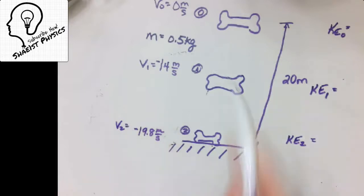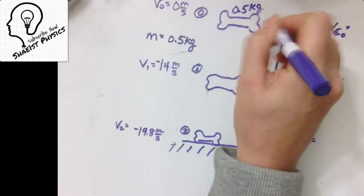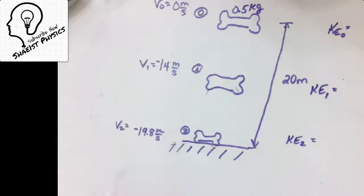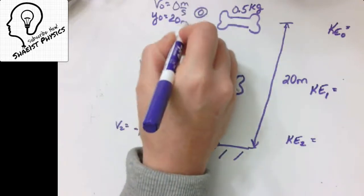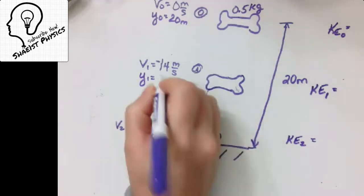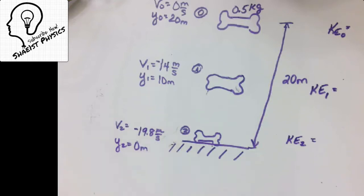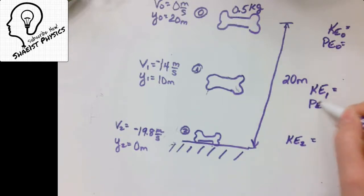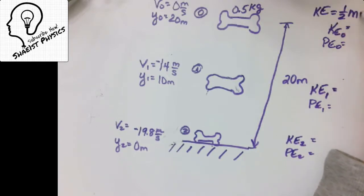What I'm doing is pulling out the key variables for each and every moment. At the top, y = 20 meters. At moment 1, y = 10 meters. At moment 2, y = 0 meters. Now let's go ahead and calculate — and let's not just calculate kinetic energy, let's also calculate potential energy while we're at it, for each moment.